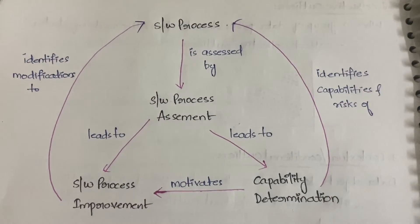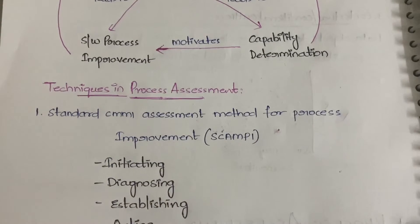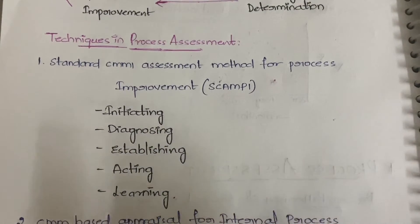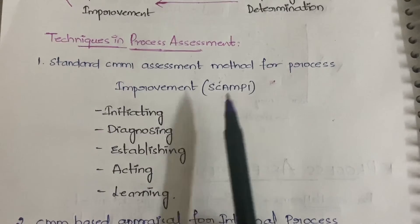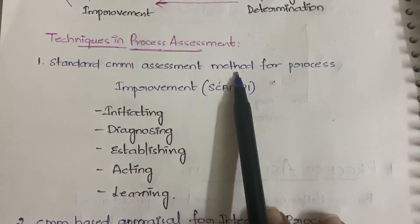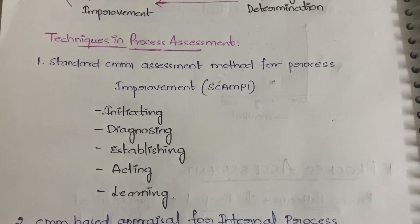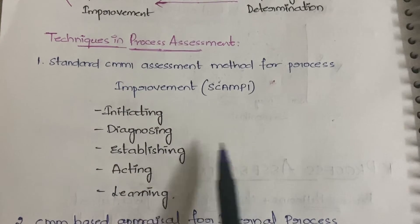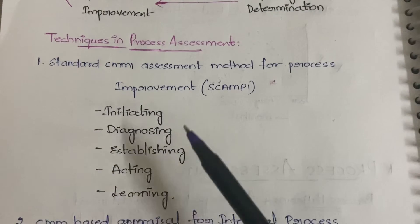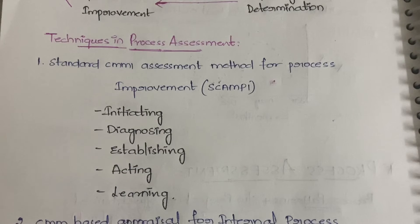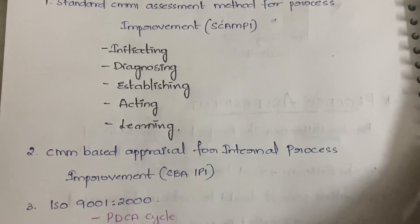When doing process assessment you have some techniques — three techniques in total. The first one is the Standard CMMI Assessment Method for Process Improvement, SCAMPI in short. In SCAMPI there are five steps: initiating, diagnosing, establishing, acting, and learning. Initiating means starting, diagnosing means testing, establishing means getting a plan, acting means implementing it, and learning means reviewing what was done and identifying any mistakes.